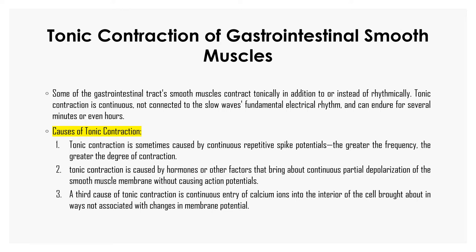There are three main causes of tonic contractions. First, tonic contraction is sometimes caused by continuous repetitive spike potentials — the greater the frequency, the greater the degree of contraction. Second, tonic contraction is caused by hormones or other factors that bring about continuous partial depolarization of the smooth muscle membrane without causing action potentials. Third, tonic contraction is caused by continuous entry of calcium ions into the interior of the cell brought about in ways not associated with changes in membrane potential.